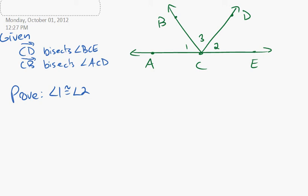We've got CD bisecting BCE, so we know that these two angles are congruent. And then it says CB bisects ACD, so we know that these two angles are congruent.